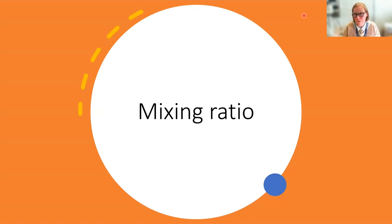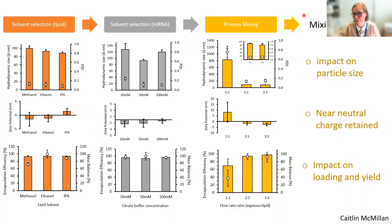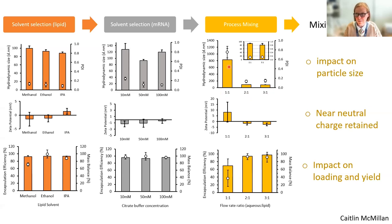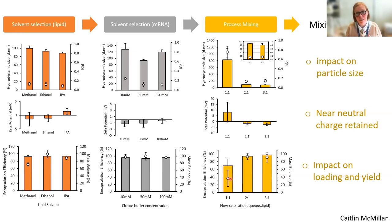What about the parameters we can control, specifically mixing ratio? This work was done with the PNI NanoAssemblr. We adjusted mixing ratio from one-to-one alcohol to buffer, to two-to-one buffer to ethanol, and three-to-one. At the one-to-one we get very large particle size and very large PDI — it's not a nice product. If you go two-to-one and three-to-one, particle size comes down and levels off. Zeta potential is messy at one-to-one for LNPs, and loading is low with even lower recovery of mRNA.